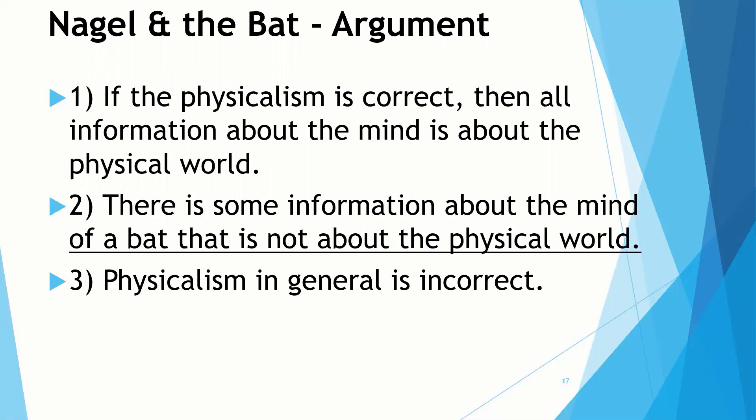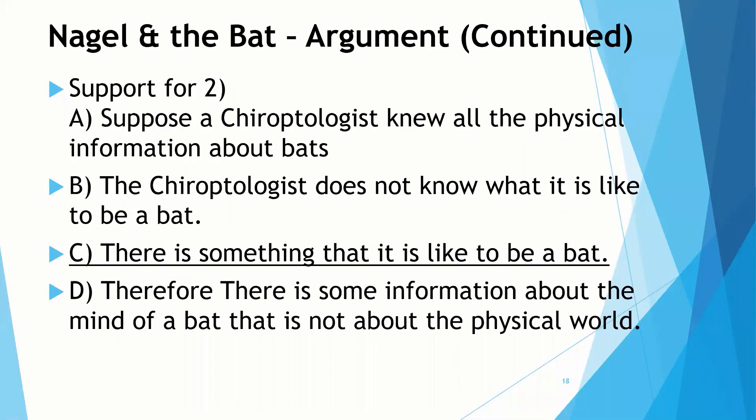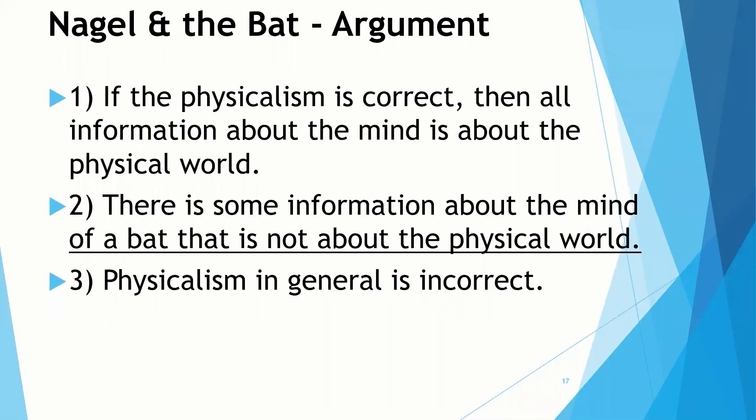Let's take a little more time to make sure we're really clear on the second premise. Why does he think the second premise is true? This is where the work is being done. Here is support for the second premise. Suppose that a chiroptologist knew all the physical information about bats. The chiroptologist does not know what it's like to be a bat, but there is something it's like to be a bat. Therefore, we know that there's some information about the mind of a bat that's not about the physical world.